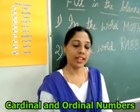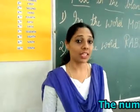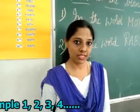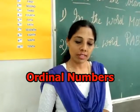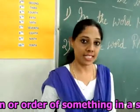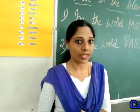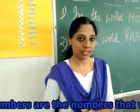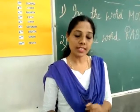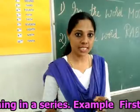Now we will learn about cardinal and ordinal numbers. What are cardinal numbers? Cardinal numbers are counting numbers — the numbers we use for counting, for example one, two, three, and so on. What are ordinal numbers? Ordinal numbers define the position or order of something in a series, for example first, second, third, etc.